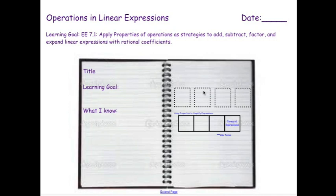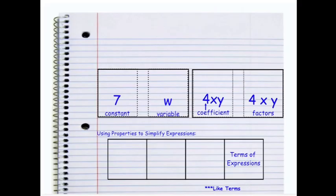factor, and expand linear expressions with rational coefficients. The properties of operations are the simple properties we discussed early in the year: associative, commutative, identity. We want to use those properties to manipulate equations so that we can write them in simplest form, simplify them, and make them easier to understand.